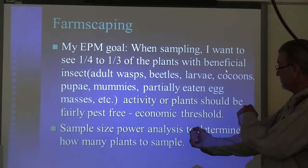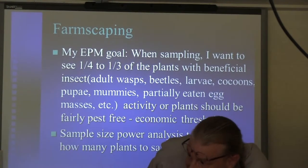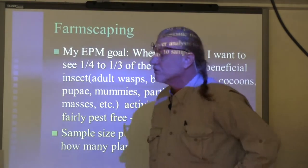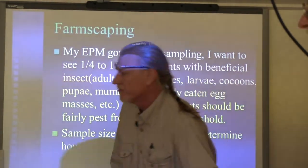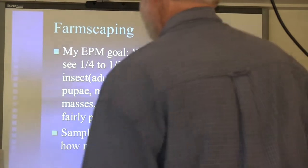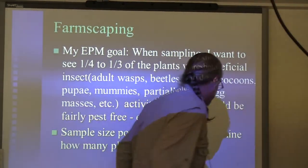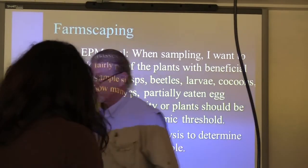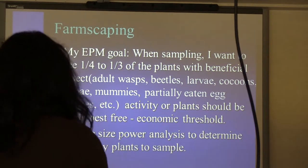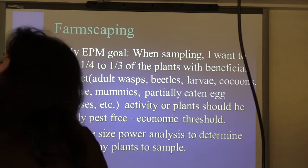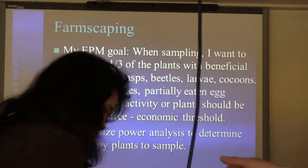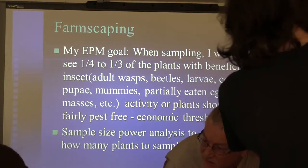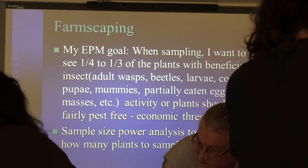So you have the right plants. Plans B, C, and D — that's the other thing you've got to have: multiple redundant systems. Multiple redundancy is very important. You want a deep field, a deep bed.